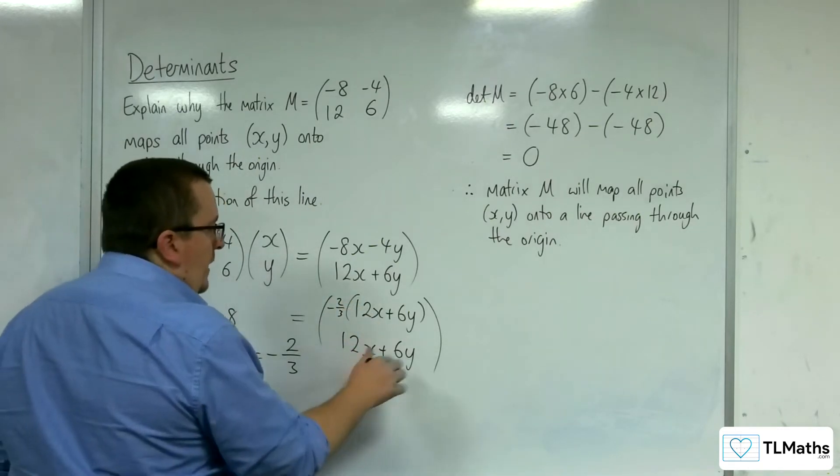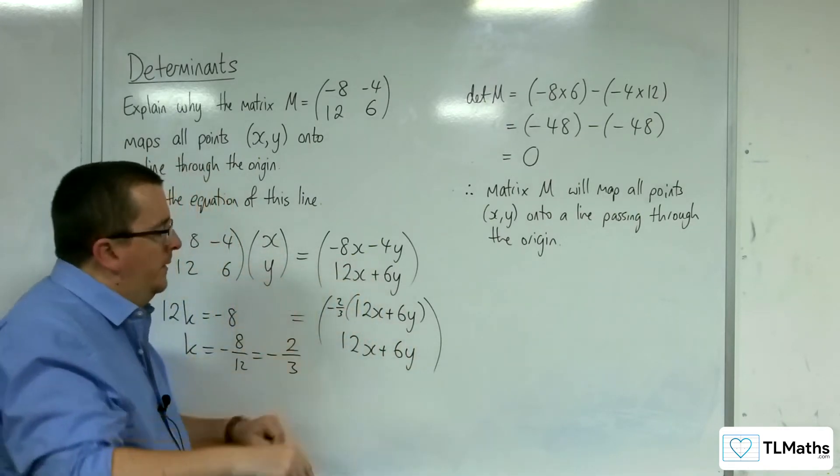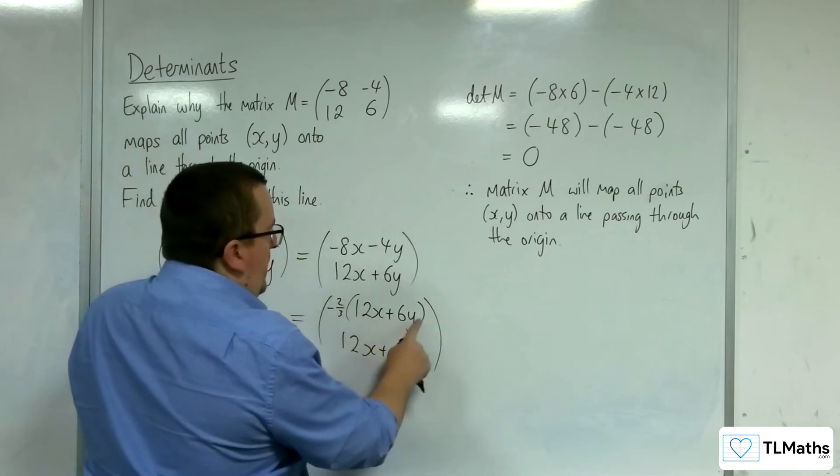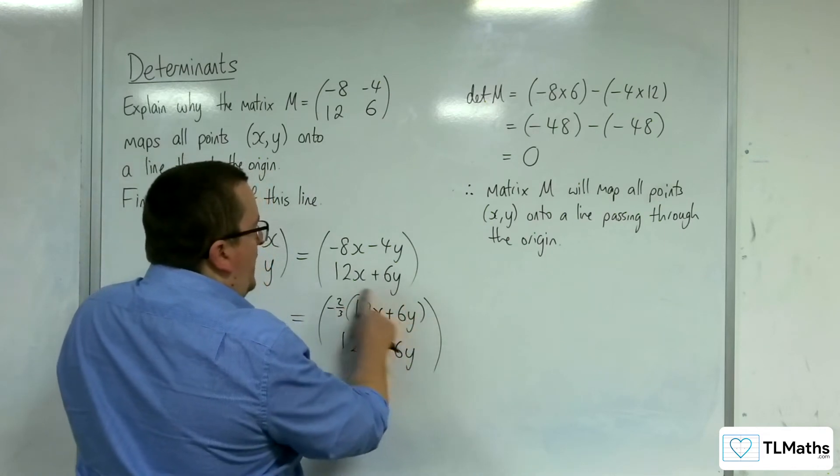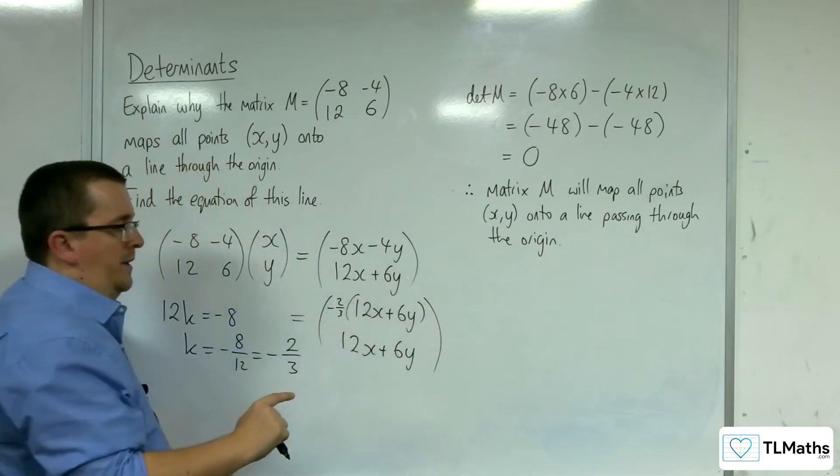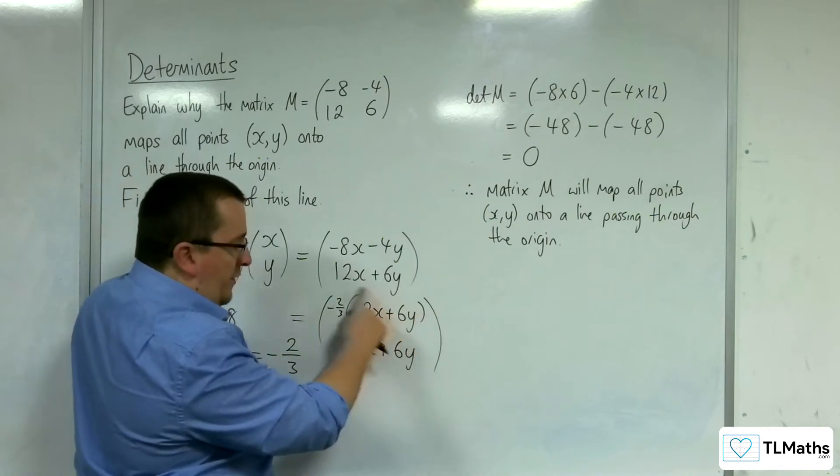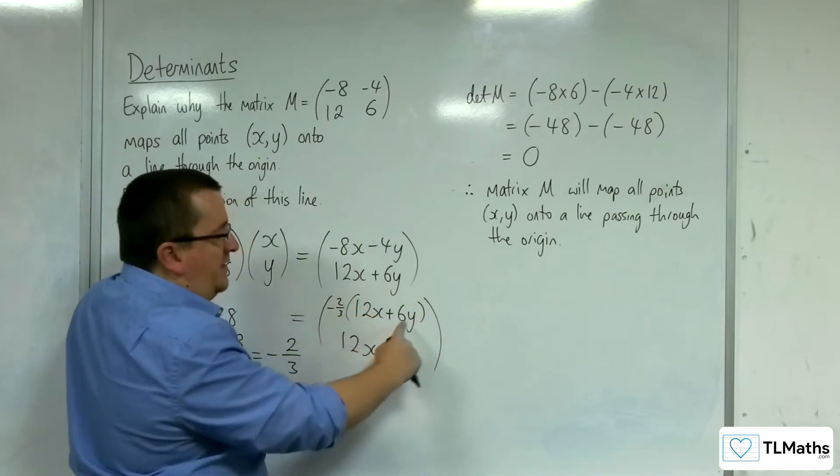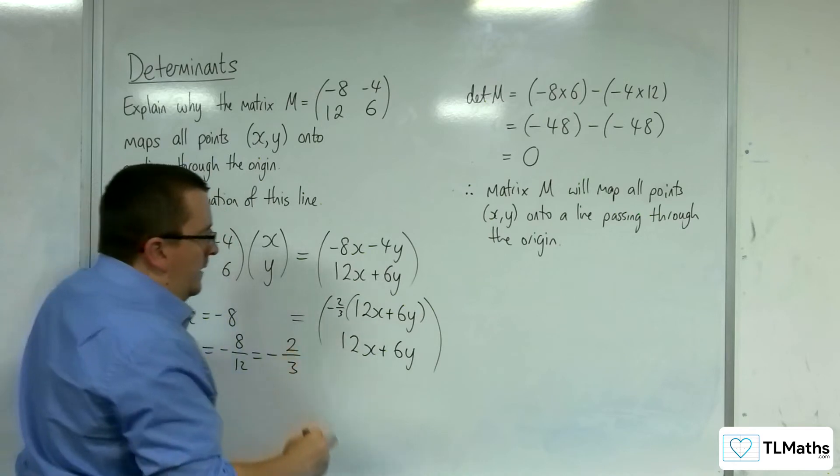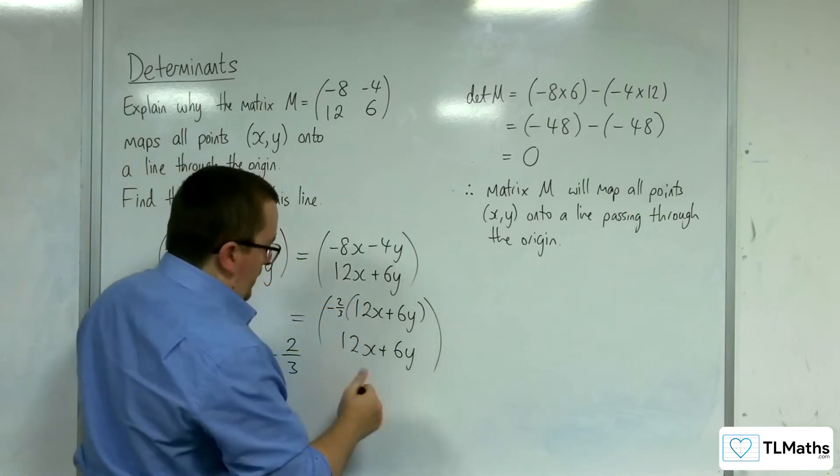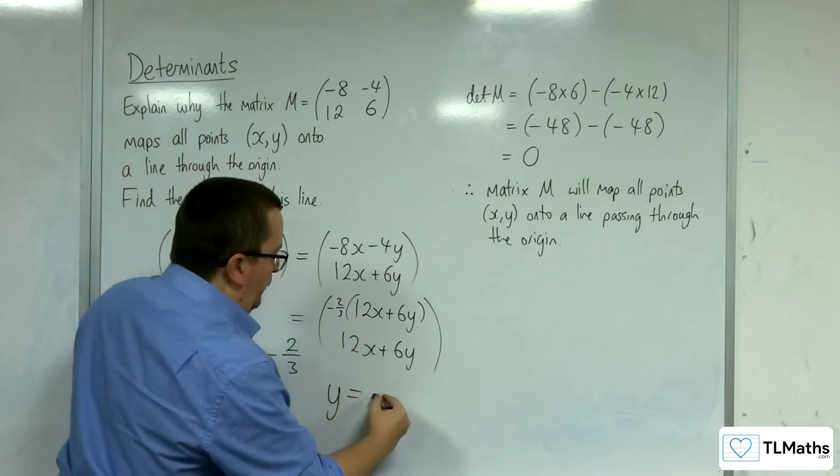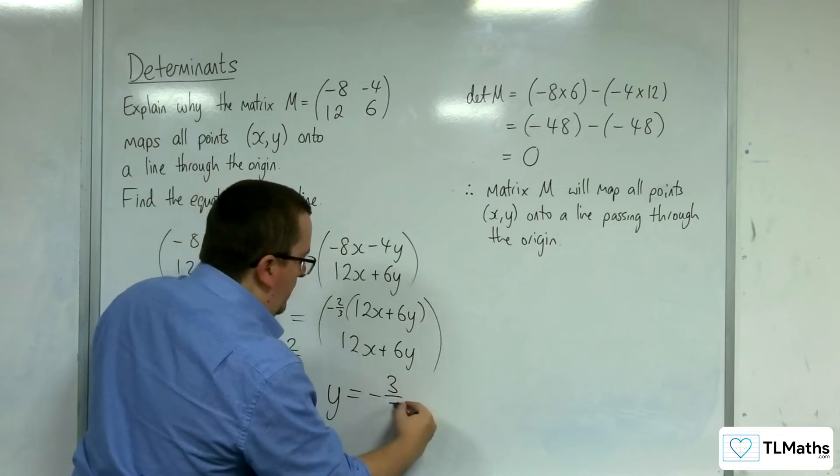So, what you can see here is that the y-coordinate is negative 3 halves of the x-coordinate. Okay, because I would need to multiply this by negative 3 halves to get to the 12x plus 6y. So, the equation of the line is y is equal to minus 3 halves x.